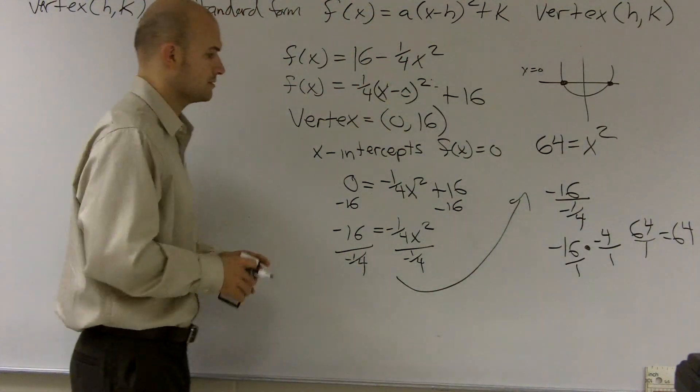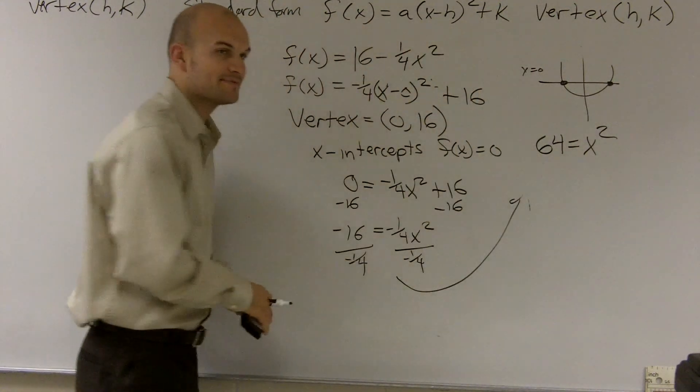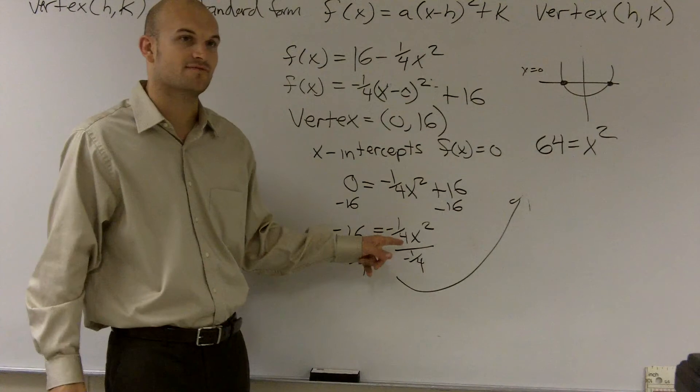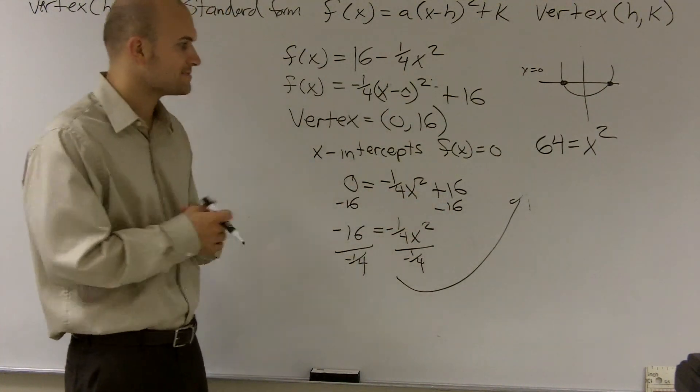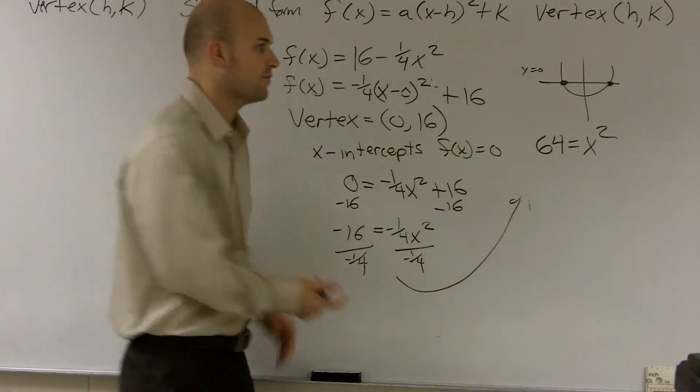So you couldn't just multiply negative one-fourth by a negative four? You absolutely, that's absolutely another way you could have done it. If you wanted just to multiply, if you see that subtraction, it's the exact same thing. If you want to see that, you just want to multiply by negative four on both sides, you absolutely could have done that as well.